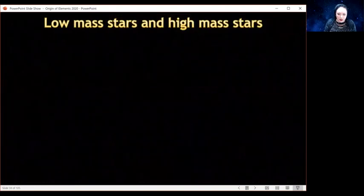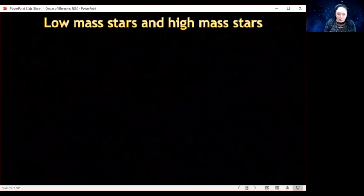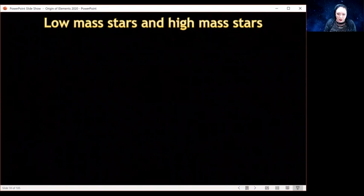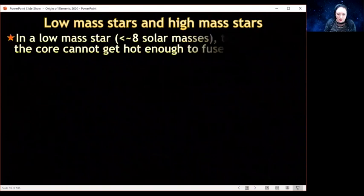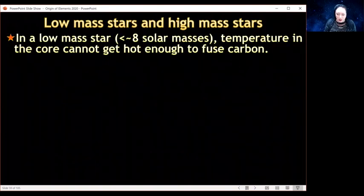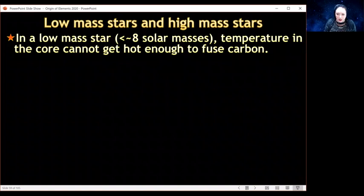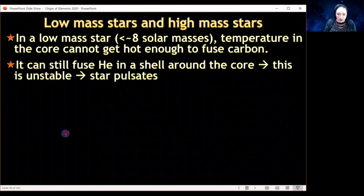So again, let's come back to talking about low-mass stars and how they compare to high-mass stars. In a low-mass star, you don't get past sticking helium together. So you've got a core made of carbon, but it's not going to do any more fusion. And these stars are generally below eight solar masses. They're just not hot enough to fuse carbon.